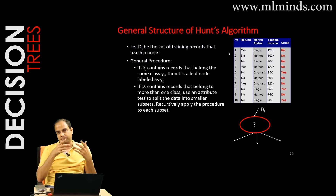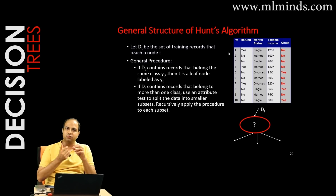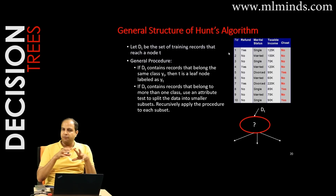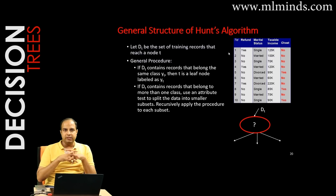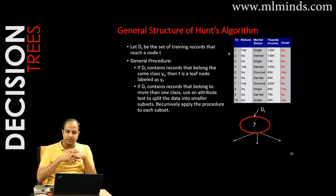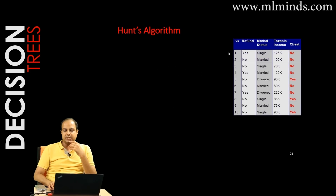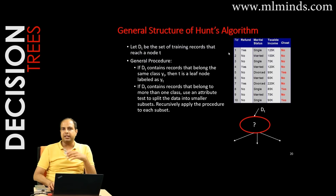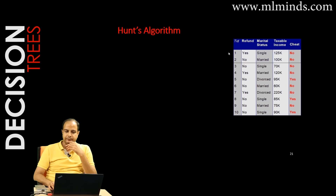In general, you want to do at least one root node split. After building the root node, those ten instances will either go to the left side or the right side. Let's see how Hunt's algorithm works and then come back to this explanation.